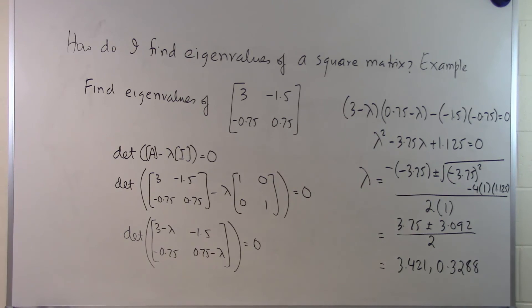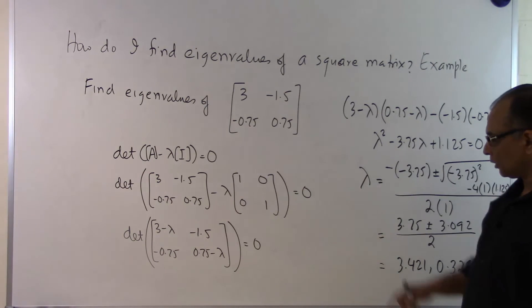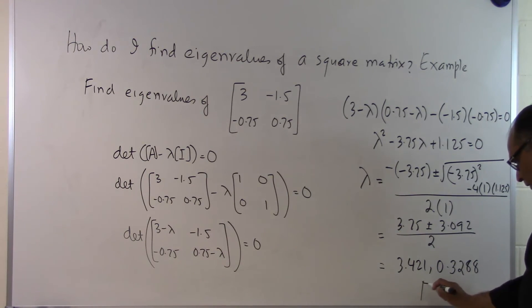So those are the two eigenvalues. λ₁ = 3.421 and λ₂ = 0.3288 are the eigenvalues of this square matrix. That is the end of this segment.